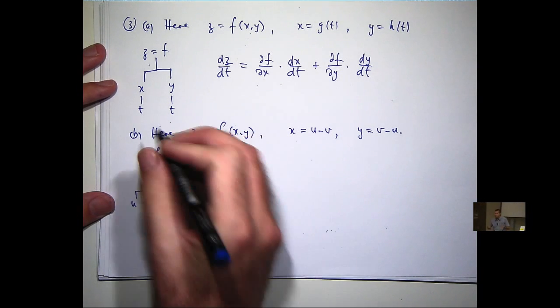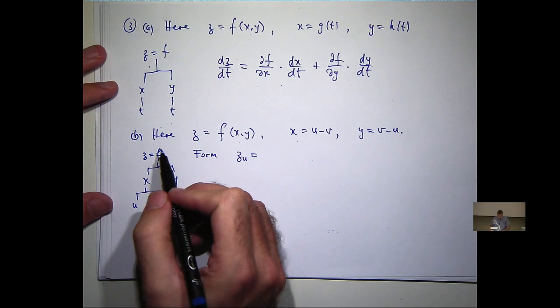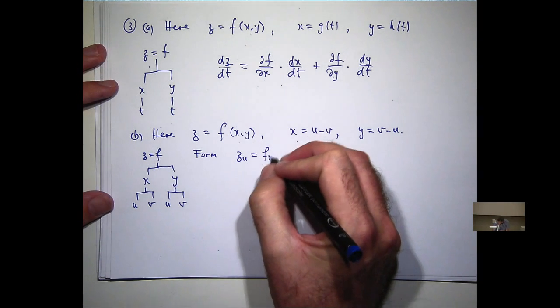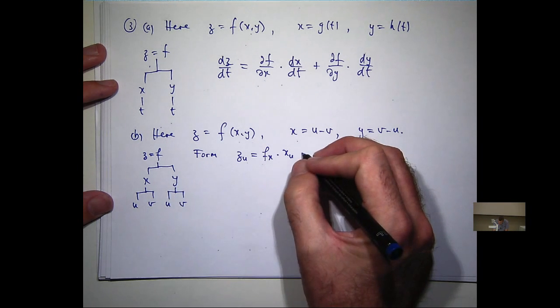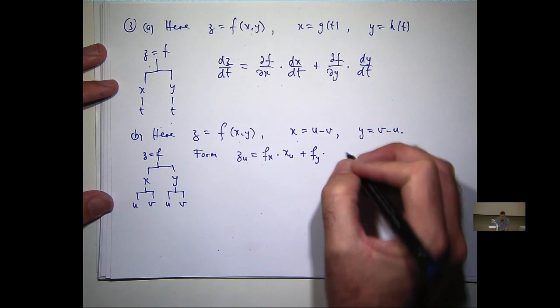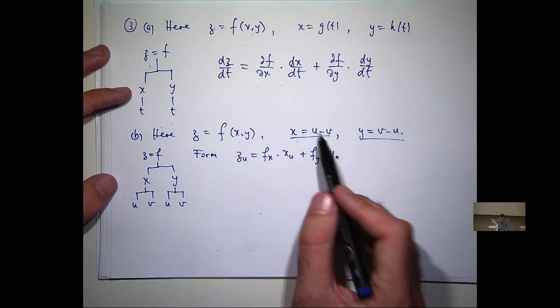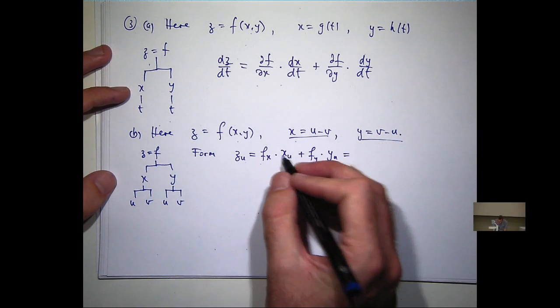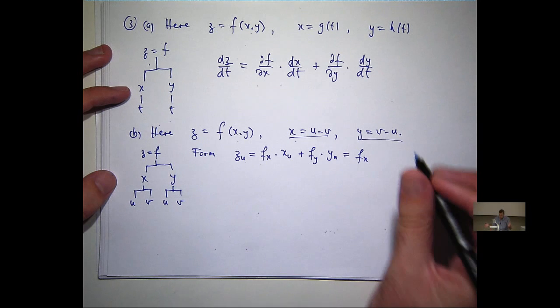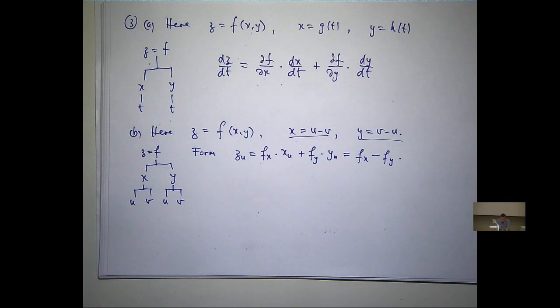So z sub u, what's that going to be? It's going to be df/dx times x sub u plus df/dy times y sub u. Now we can go up to these equations and calculate x sub u and y sub u. So x sub u is going to be 1, y sub u is going to be minus 1. Now I don't know what f is, so I can't calculate the partial derivatives f sub x and f sub y, so I've got to leave them for the moment.